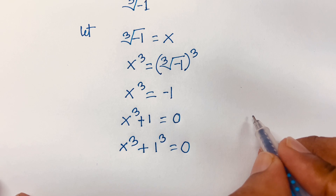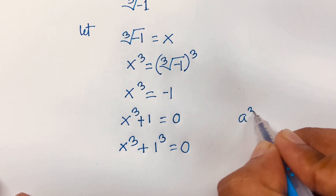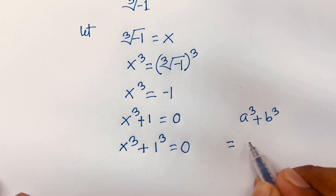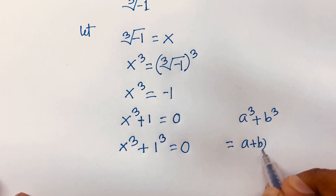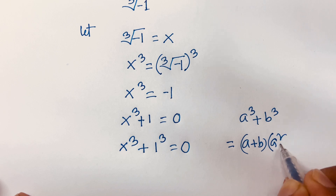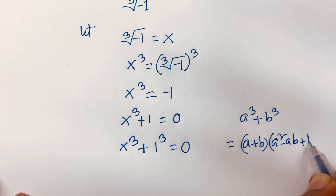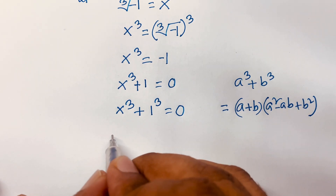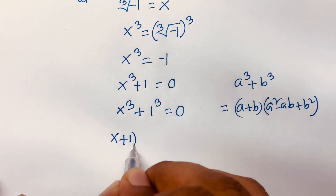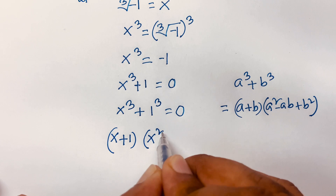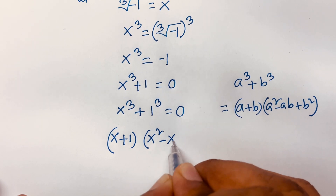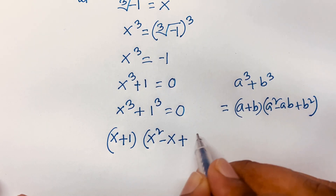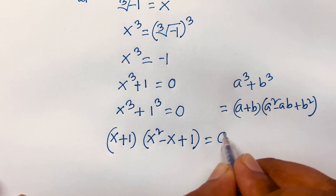We know that the algebraic rule a³ plus b³ is equal to (a plus b) times (a² minus ab plus b²). According to this rule, I can say here a is x and b is 1, so we get (x plus 1) times (x² minus x times 1 plus 1²) is equal to 0.